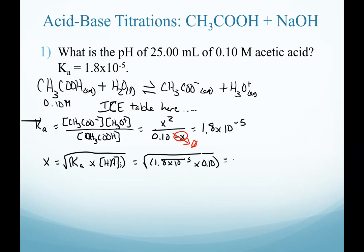Our value for x in this example is 0.001342 molar, and it's always helpful to remind ourselves what x represents. Because we have an acid solution, that is hydronium. And so our pH calculation will be the negative log of our x value.